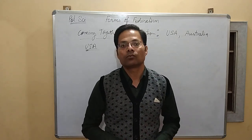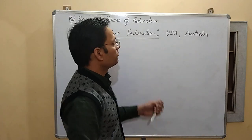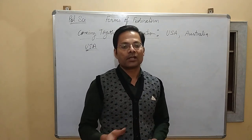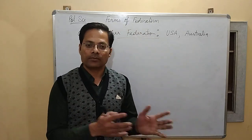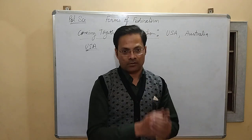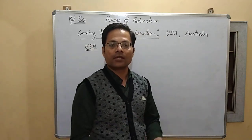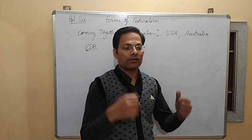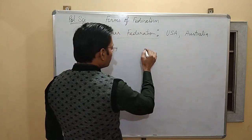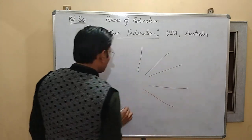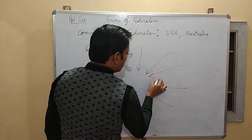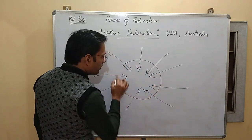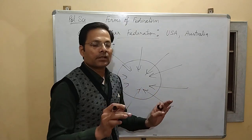After winning the American War of Independence, USA found itself in a situation where different states could become independent countries. They realized that if they remained separated, they would be weak. So they decided: why not come together and form a bigger unit to be more powerful? They decided to form that bigger unit, and the different states of America pooled their sovereignty together.